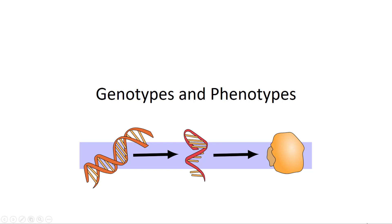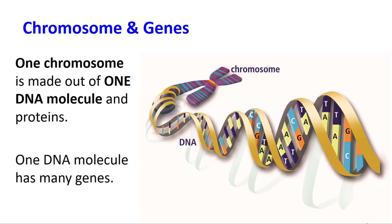Hi, let's discuss genotypes and phenotypes. In order to start, you've got to understand the relationship between a chromosome and genes. One chromosome is made out of one DNA molecule, and one DNA molecule has many genes on it.